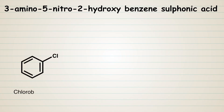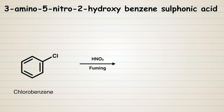Chlorobenzene on reaction with fuming nitric acid undergoes a nitration reaction to attach nitro groups to the ortho and para positions, giving 2,4-dinitrochlorobenzene.